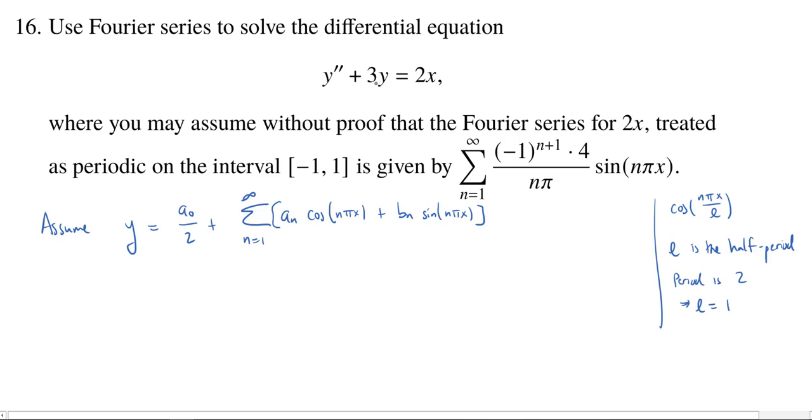So, first, the only way we're going to get a constant is by looking at this 3y term. Because if y has a constant, and we take derivatives, in fact, two derivatives, those constants will go away. So, whatever the constant term of y is, then three times it will be the constant term for this left-hand side. However, for 2x, there is no constant term. And so, we can assume that the a₀ is zero. So, we assume a₀ equals zero.